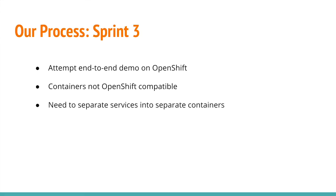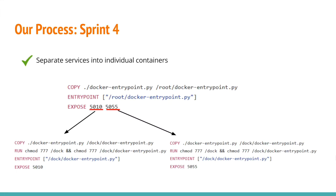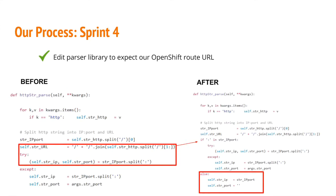Consequently, we had to separate the containers. In Sprint 4, we managed to separate the Process Manager and the FileIO Manager into their own Docker containers, allowing us to deploy them on OpenShift. However, when we tried to push or pull data using the FileIO container, we realized the parser library was expecting an IP address and a port instead of the URL we were using. After this realization, we were able to change the code within the parser library to allow for the OpenShift root URL.